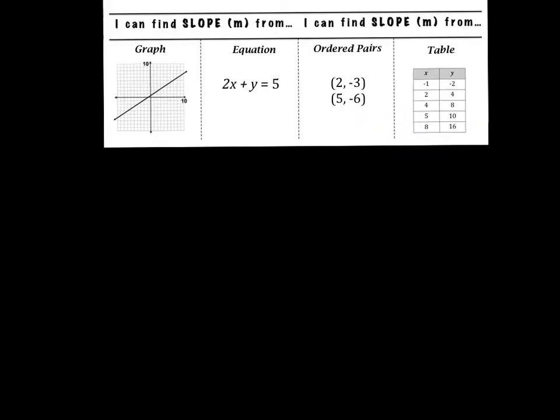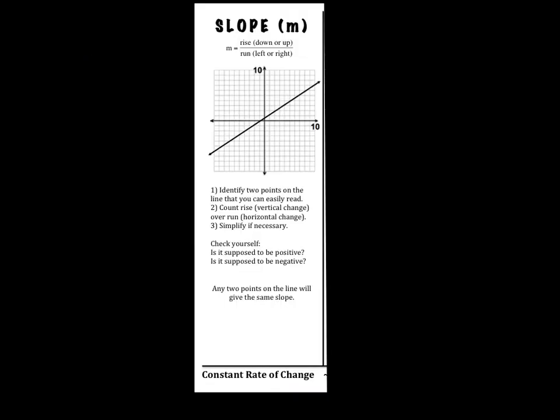Now let's do the examples in your foldable. Open up your notebook. And if you're just watching this for extra review, then just follow along or take notes on separate paper. We're in the tab that says I can find slope from a graph. Our steps for finding slope from a graph are to identify two points on the line that you can easily read, count our rise over run, and then simplify the ratio. We always want to double check that if it's positive or negative, we have the correct sign.